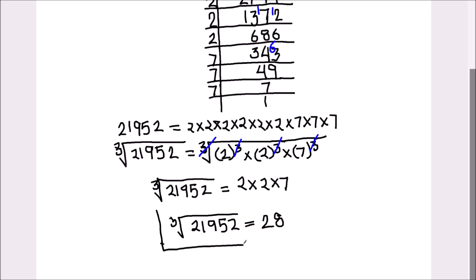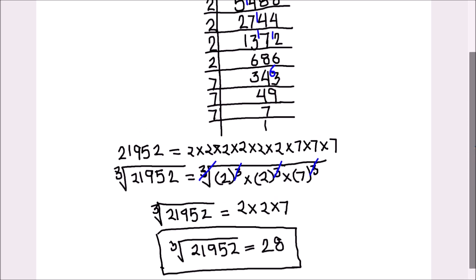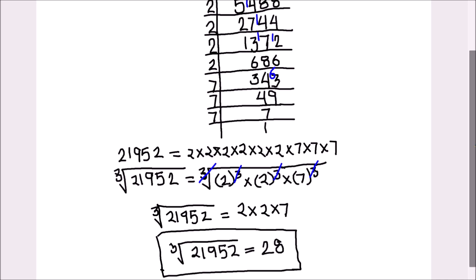So the cube root of 21,952 is 28. This is our final answer. We will box the answer. So this is how we find the cube root of any number by prime factorization. I hope this video is helpful to you. If you like the video, please hit the like button and subscribe to my channel for more math videos. Thanks for watching.